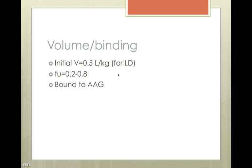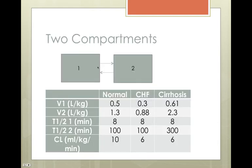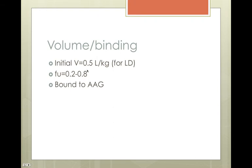The initial volume of distribution, if you're trying to give a loading dose, which we often do for this drug, you're going to use a half a liter per kilogram to load the patient because you want to base that on the initial volume if you're giving a bolus. Fraction unbound, the binding is quite variable, but it is highly bound to AAG. If there are changes in AAG, you could see some effects.